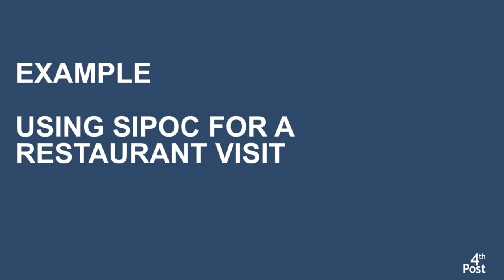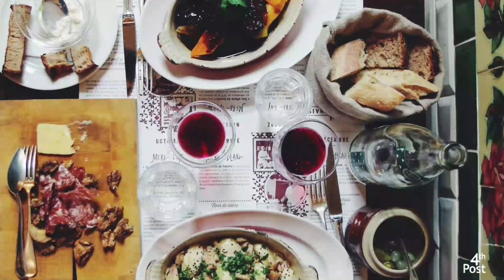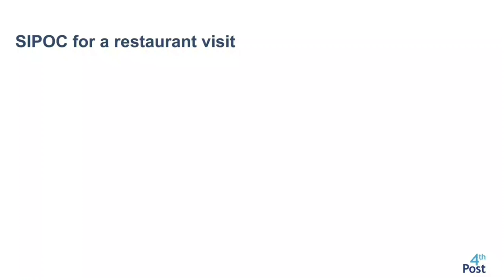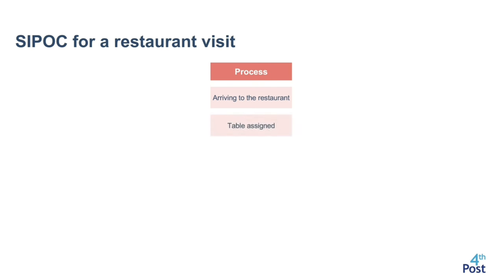Let's try to use the SIPOC with a simple example that most of us are familiar with: a dining experience at a restaurant, looked at from the restaurant's perspective. We start with the process, keeping in mind that we want the main processes without too much detail. In this case, the process steps are: the customer arrives at the restaurant, they are assigned to a table, they order some food, they eat the food, they pay their bill, and they leave the restaurant.